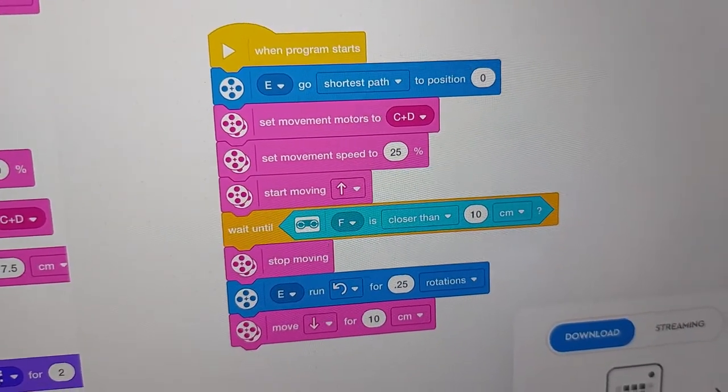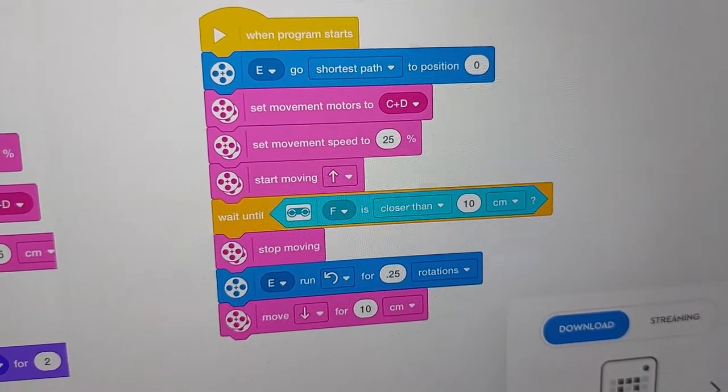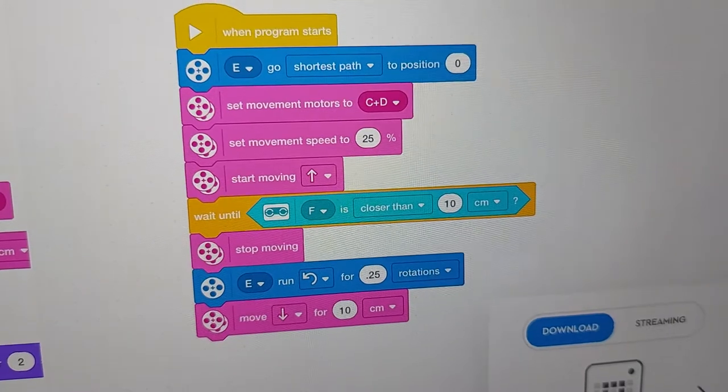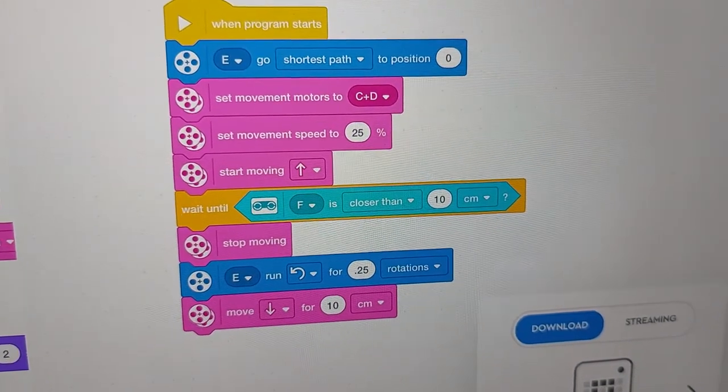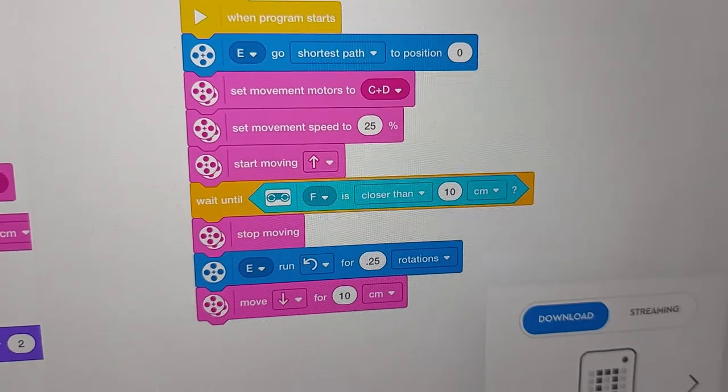Then we're going to set up which motors to use for driving, set our speed and start moving. Then I'm going to stop once we're closer than 10 centimeters, and at that point we're going to drop the arm down and then back up a little bit.